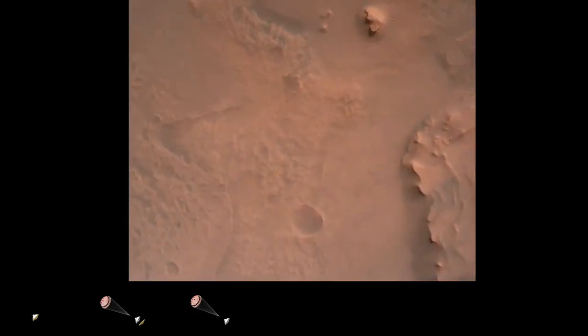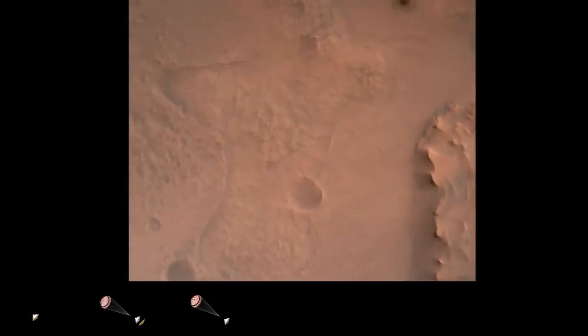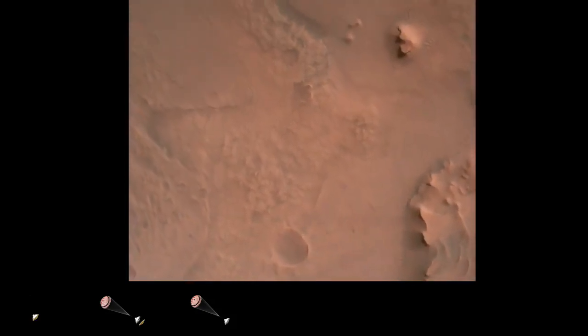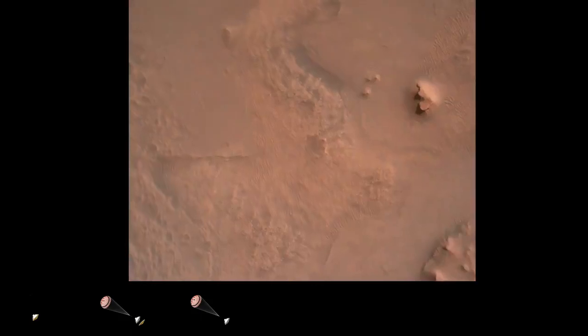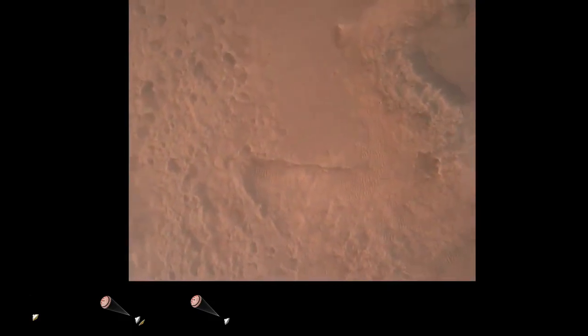Perseverance is continuing to descend on the parachute. We are coming upon the initialization of terrain relative navigation and, subsequently, the priming of the landing engines. Our current velocity is about 90 meters per second at an altitude of 4.2 kilometers.